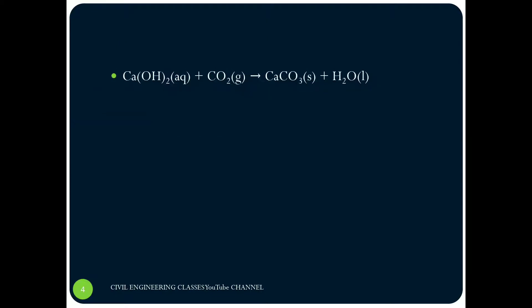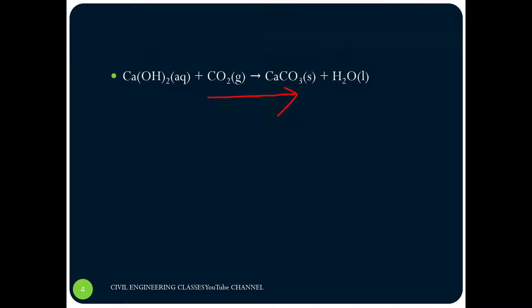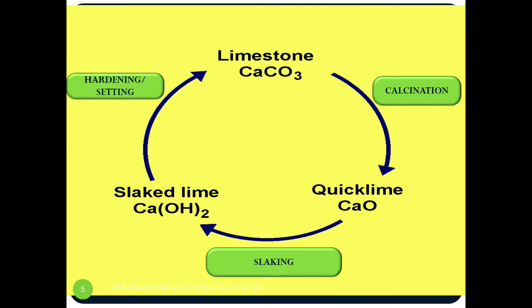This process is called slaking. But the problem is that the slaked lime will absorb carbon dioxide and get converted back to calcium carbonate — it will harden to calcium carbonate. Because of that, we have to use slaked lime as soon as possible after it is produced.